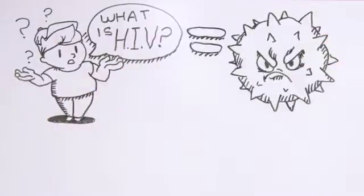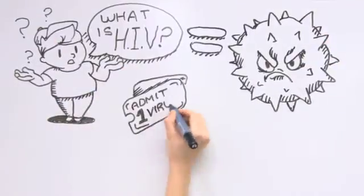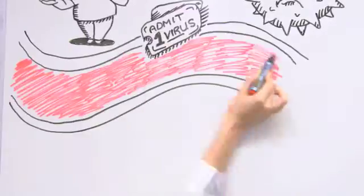HIV is a virus, and the virus somehow gains entry into the bloodstream. Once it's in the bloodstream, HIV is able to attack a cell called a lymphocyte.